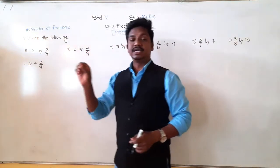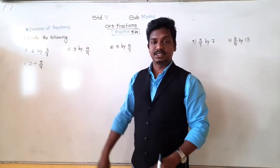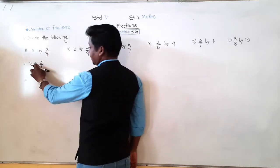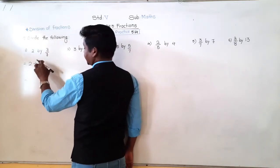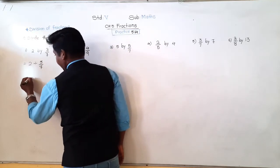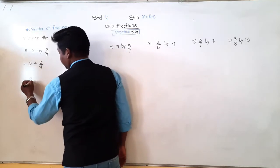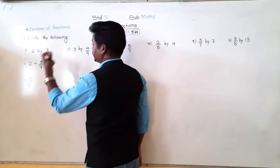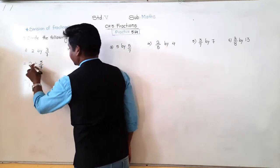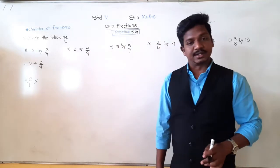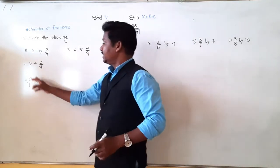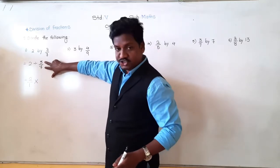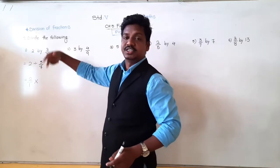Now, we have to take 2 divided by 3 upon 7. Division by a fraction means nothing but multiplication by its reciprocal. So the first number I write as it is — it is a whole number so it has denominator 1. Division changes into multiplication, and the next fraction will be changed into its reciprocal.